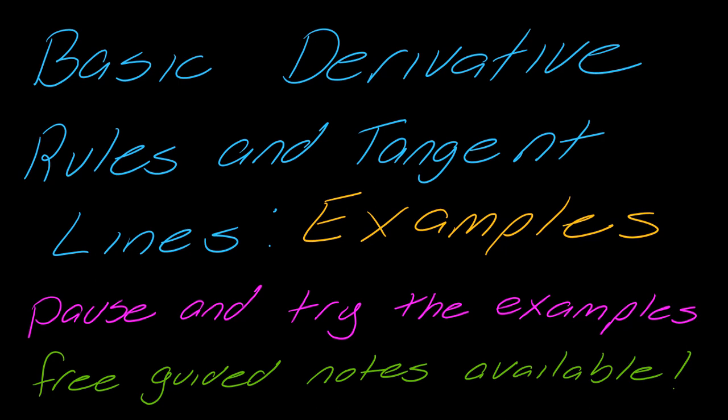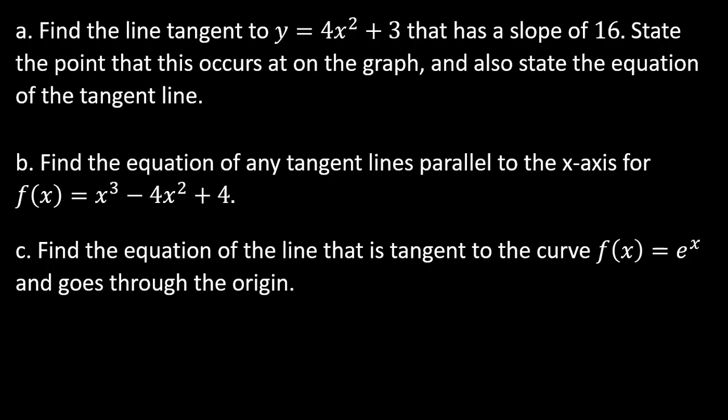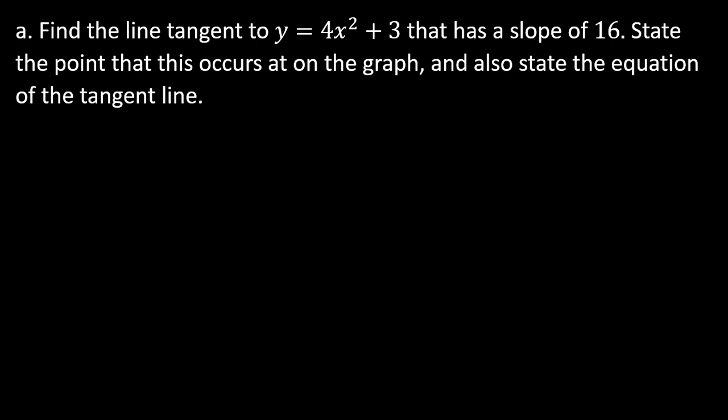Hey guys, so this is a set of examples using basic derivative rules and finding different types of tangent lines. I want to show you three very different problems that are typical in a calculus class, to give you a good breadth of how this could be asked. Anytime you see the word 'tangent,' it should indicate that you need to take a derivative somewhere. You can pause the video to read the examples, but otherwise let's jump right into it.